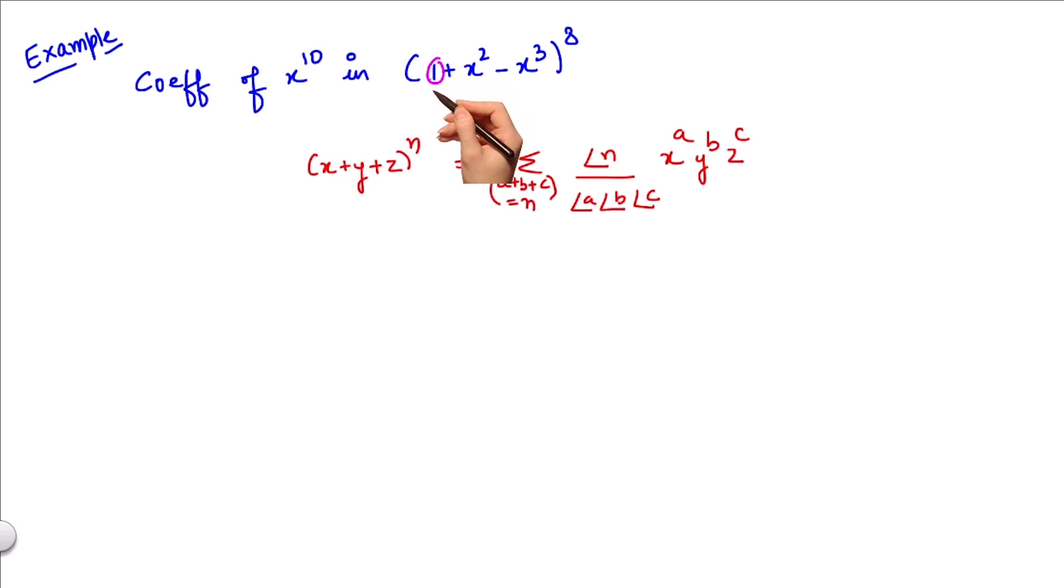In this question, x = 1, y = x², and z = -x³, while n = 8.